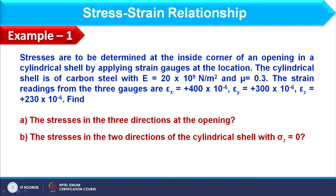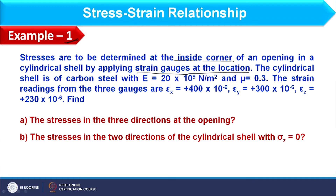Example 1 states that stresses are to be determined at the inside corner of an opening in a cylindrical shell by applying strain gauges at the location. A cylindrical shell is considered where an opening is made, and the strains generated are measured through a strain gauge instrument. The cylindrical shell is made of carbon steel with E = 20×10⁹ N/m² and μ = 0.3. The strain readings from the three gauges are ε_x, ε_y, and ε_z. We need to compute the stresses in three directions at the opening.